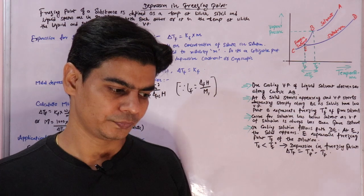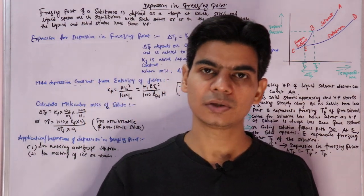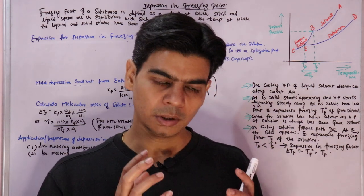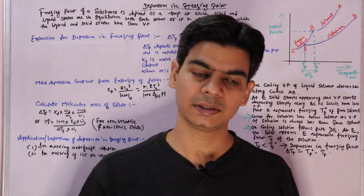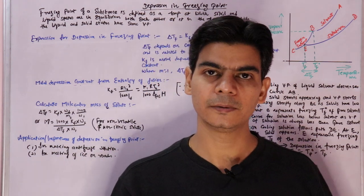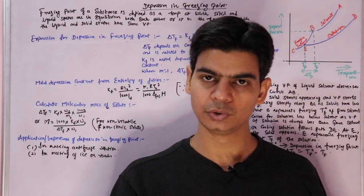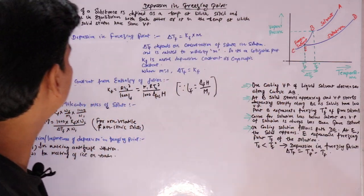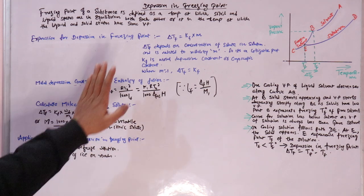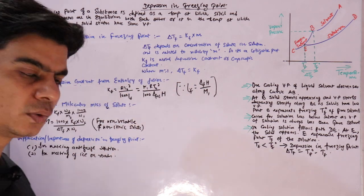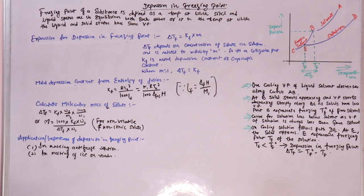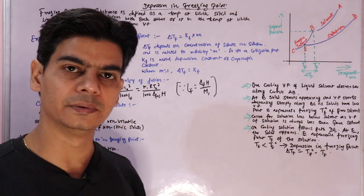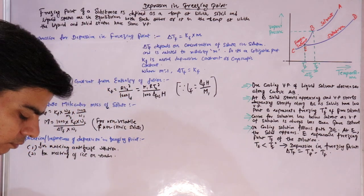Depression in freezing point is caused by the addition of solute to the solvent, so the freezing point of a solution is always less than that of the pure solvent. The freezing point is defined as the temperature at which the solid and liquid states are in equilibrium — when liquid starts changing into solid, both phases have the same vapor pressure.